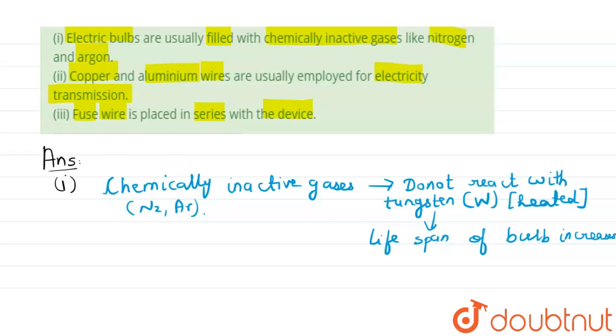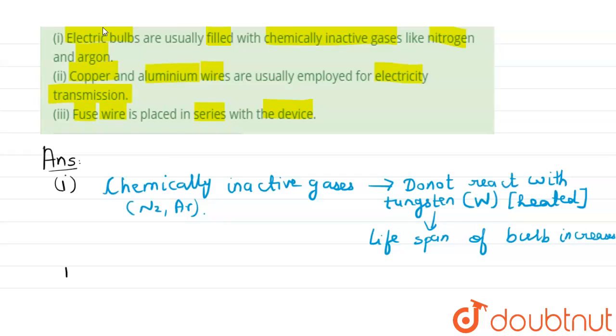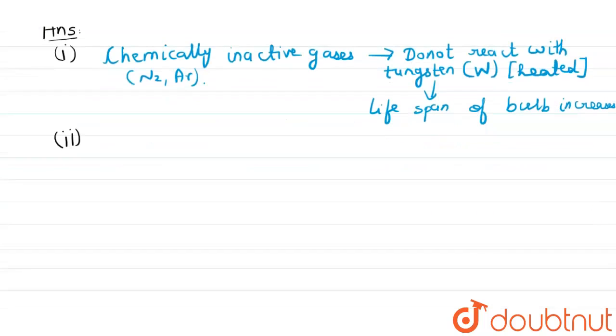In second part of the question, what is asked is why aluminum and copper wires are used in wire transmission. So what happens basically here?